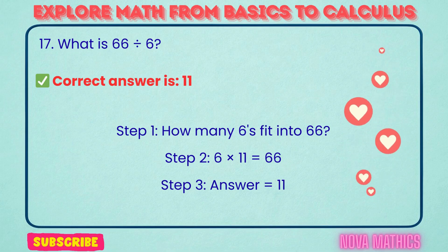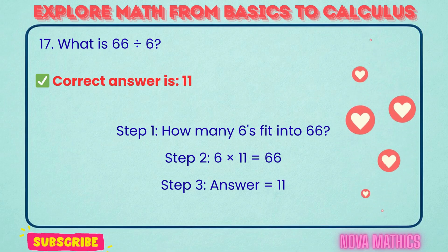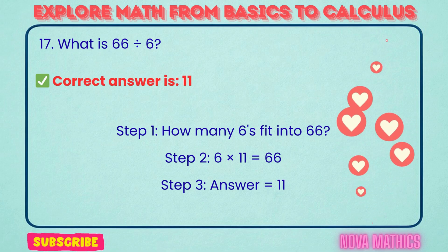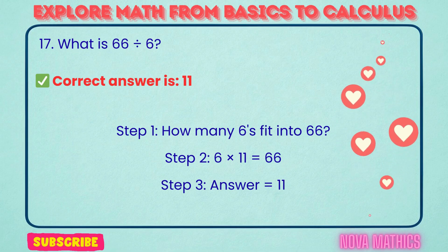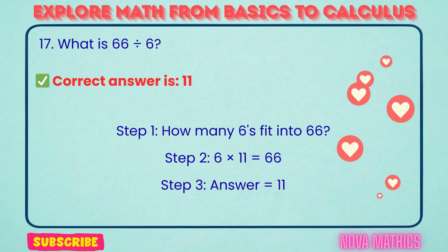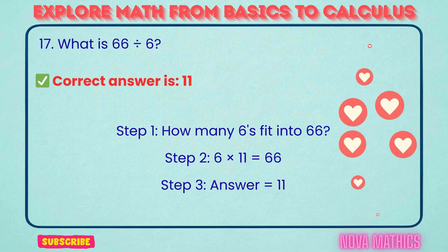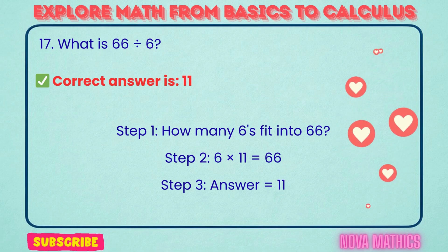16. What is 66 divided by 6? Correct answer is 11. 66 divided by 6 equals 11. We find this because 6 times 11 is 66.